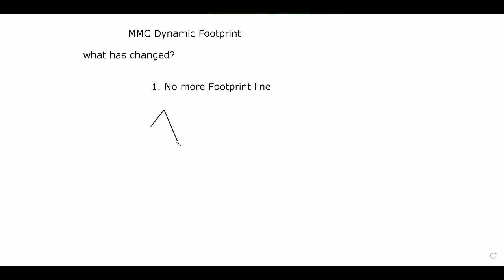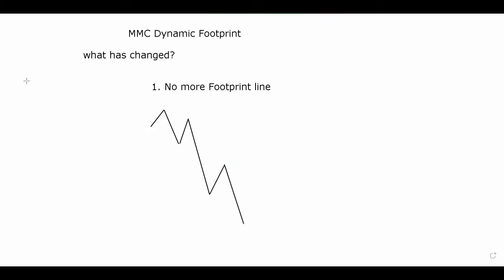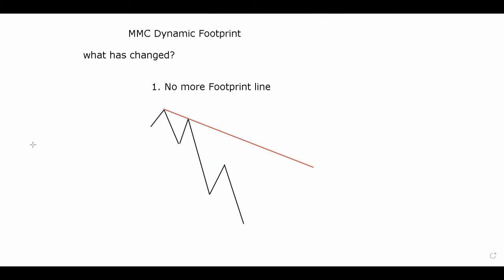His divergences are only based from trades that come from a layer line. This is an example of a footprint line - for those who do not understand what a footprint line is, it is an M pattern or W pattern. It's an M pattern when the market is selling and a W when the market is buying. Now I'm going to illustrate which one is a layer line and which is a footprint line - the red line here represents a footprint line.